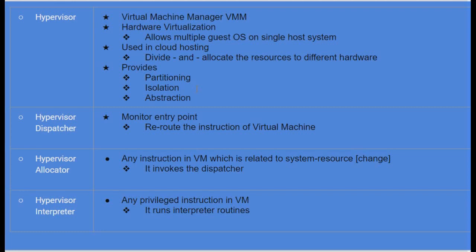The hypervisor has a dispatcher, which is the monitor entry point — it reroutes instructions of the virtual machine. The allocator handles any instruction when a system resource request comes in from the VM: it invokes the dispatcher, which then reroutes the virtual machine instruction to the hypervisor. The interpreter handles privileged or root-level system instructions coming from the VM, interpreting them so the hypervisor can interact with the hardware or underlying host operating system.